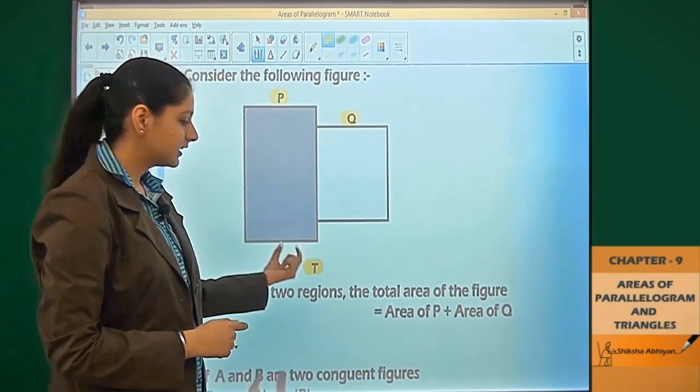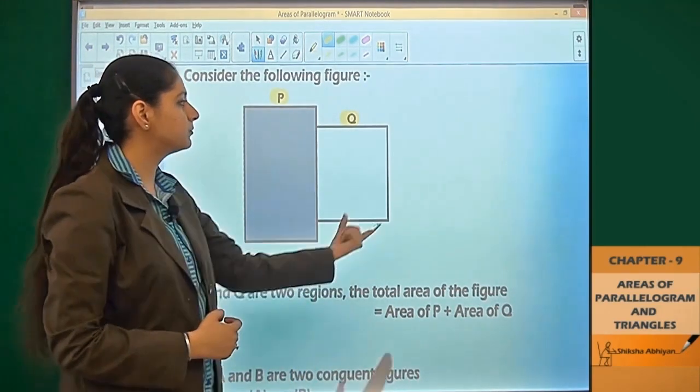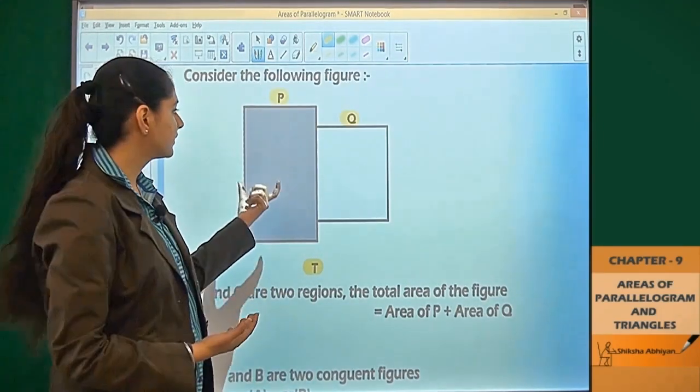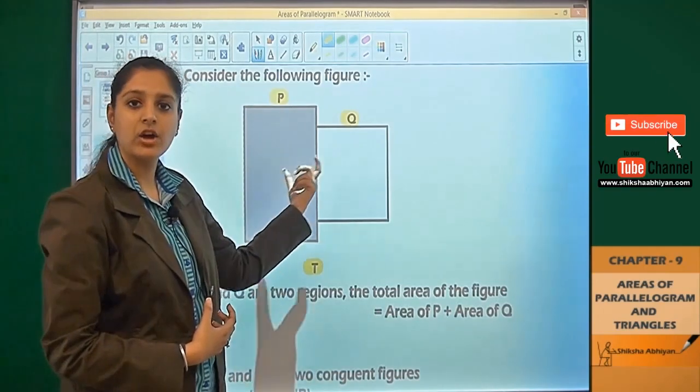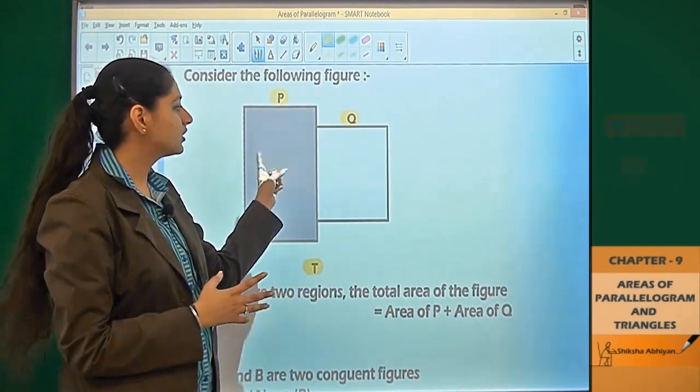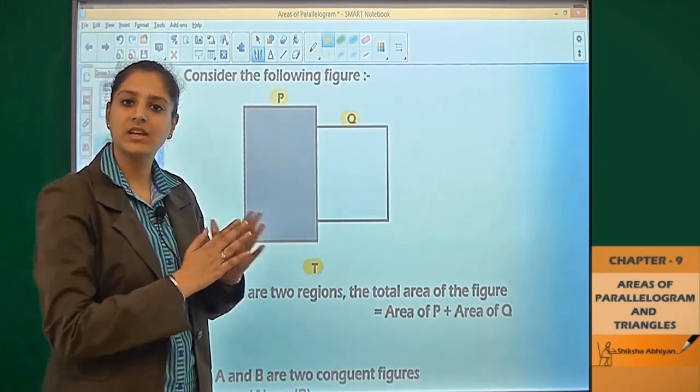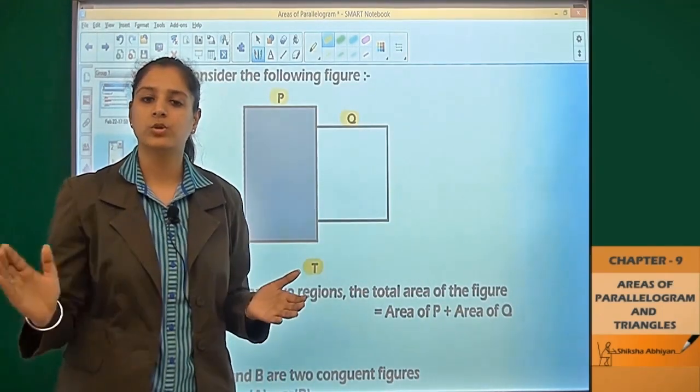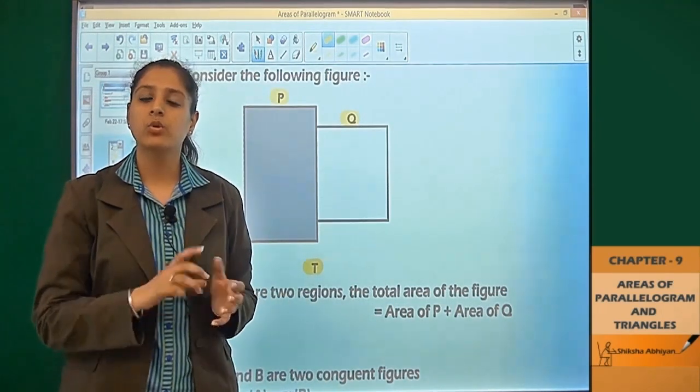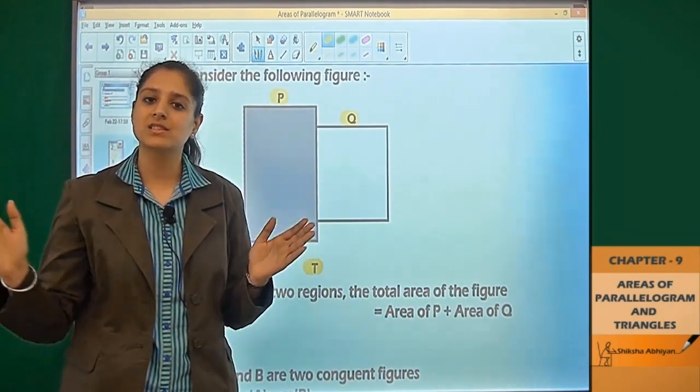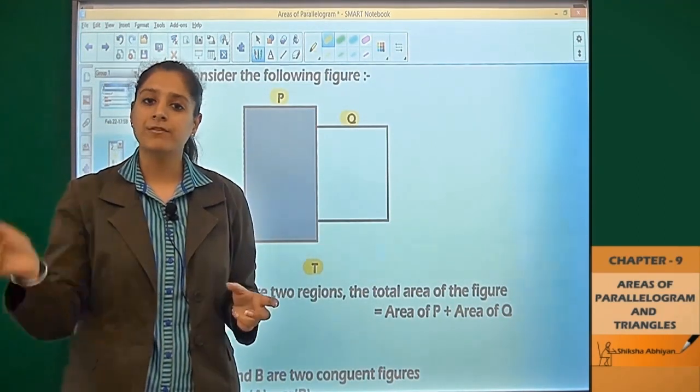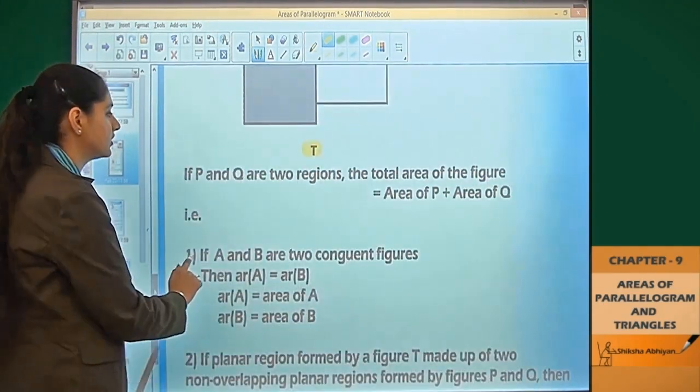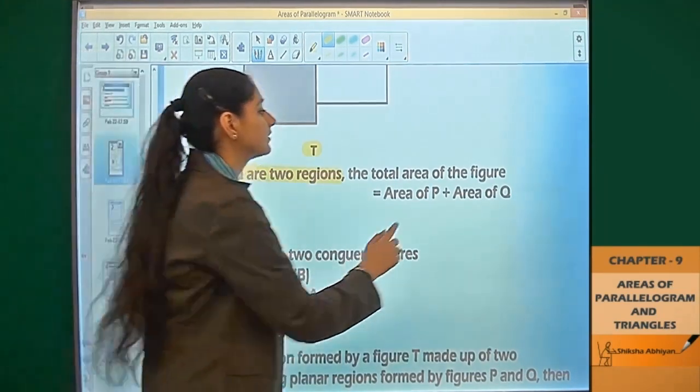The area of T equals the area of the entire figure. So we can say if P and Q are two regions, then the total area of the figure is the sum of these regions.